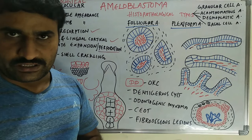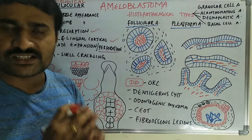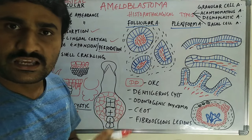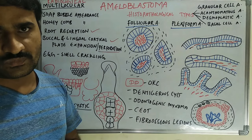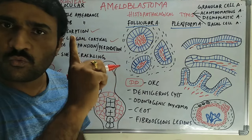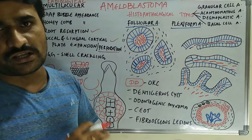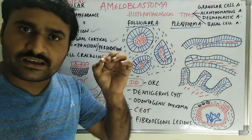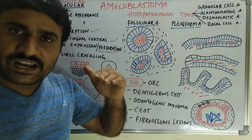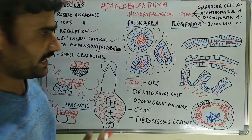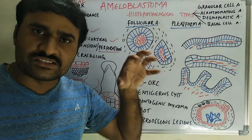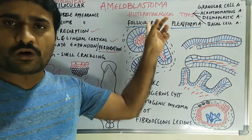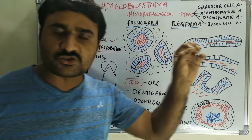Each island has two components: centrally, spindle-shaped cells resembling a stellate reticulum pattern, and surrounding them a single layer of tall columnar cells. The nucleus of these columnar cells is polarized away from the basement membrane. Multiple such islands constitute follicular amyloblastoma.